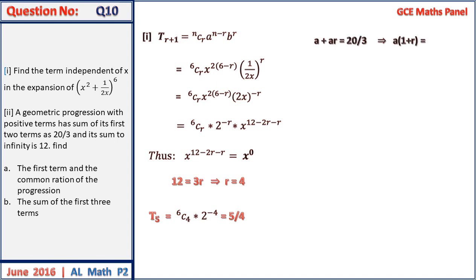The second part of the question requires us to solve for the first term and the common ratio in the geometric progression. We can formulate two equations: the sum of the first two terms is a plus ar equals 20 on 3, which factorizes to a times 1 plus r equals 20 on 3. The sum to infinity is a on 1 minus r equals 12, so a equals 12 times 1 minus r.